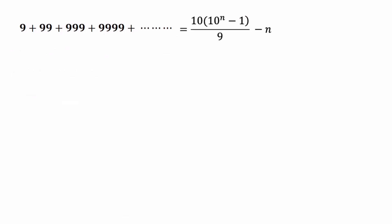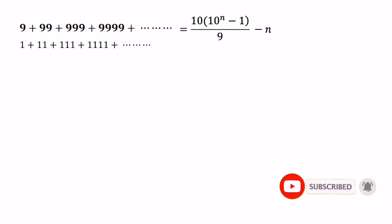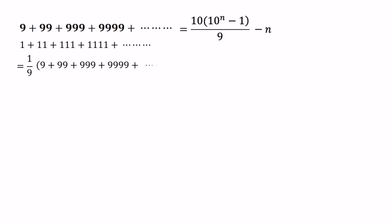Now let's imagine you need to find the value of 1 plus 11 plus 111 plus 1111 and so on. In this case, we can take 1 over 9 as a common factor. Then we have 1 over 9 within bracket 9 plus 99 plus 999 plus 9999 and so on. So the final answer is 1 over 9 times [10 times (10 to the power of n minus 1) over 9 minus n].